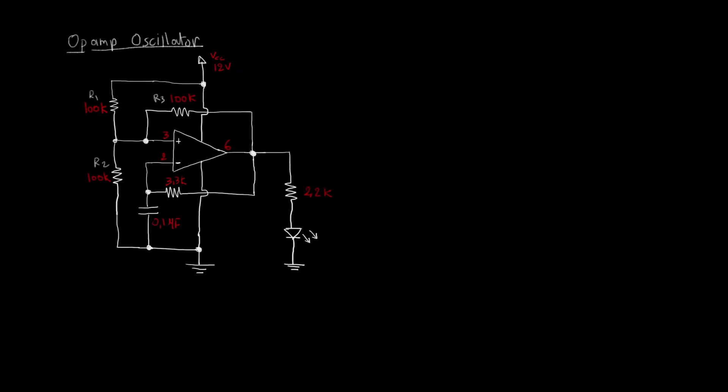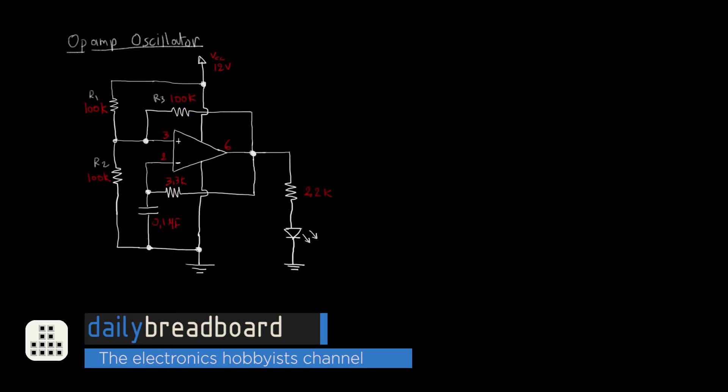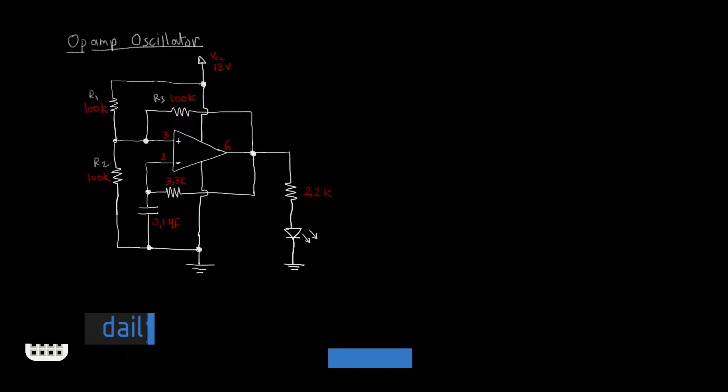In today's video we'll be looking at this oscillator based on an operational amplifier - we'll be using the LM741. We'll be analyzing the circuit and then we'll try to build it on the breadboard and test it and understand how it works. So let's start analyzing the circuit.